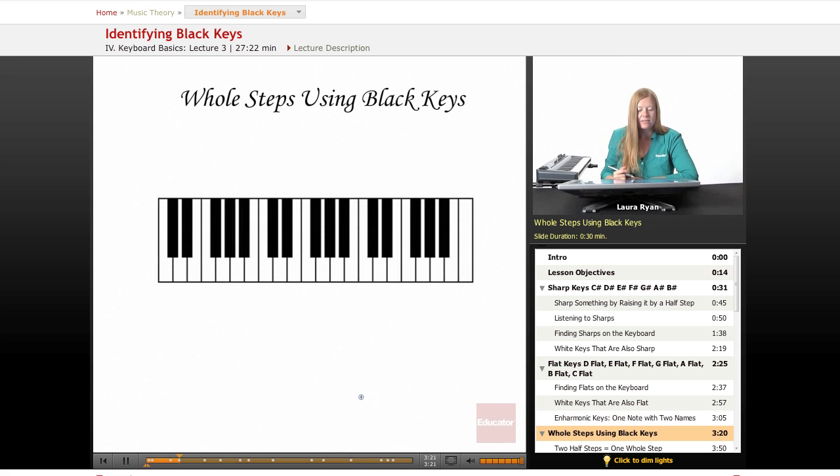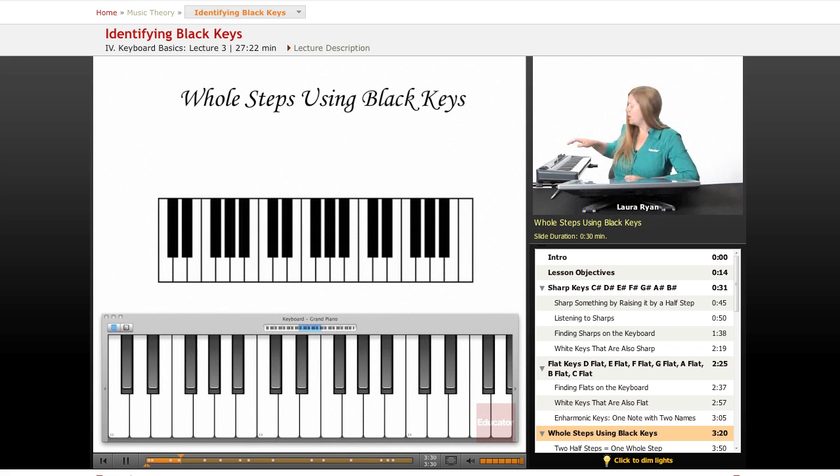Whole steps using black keys. We know that whole steps using white keys, we count, let's listen. We count one white key, here's a half step from C to C sharp. From C sharp to D is another half step. C to D is one whole step.